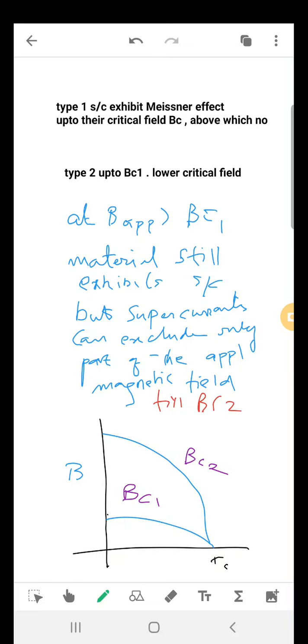Type 1 superconductors exhibit Meissner effect up to the critical field Bcr, above which there is no superconductivity. Type 2, up to Bc1 the lower critical field, and at applied magnetic field greater than Bc1, the material still exhibits some superconductivity but supercurrents can exclude only part of the magnetic field, vanishing at Bc2.